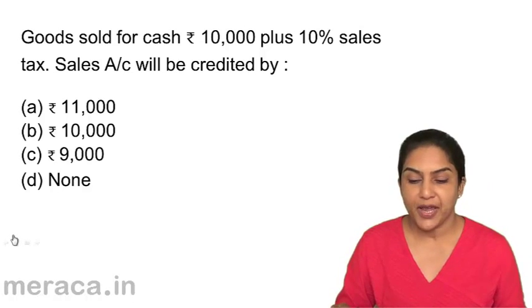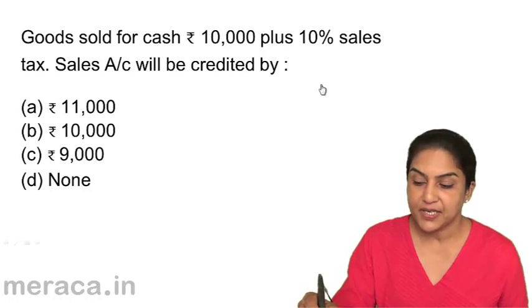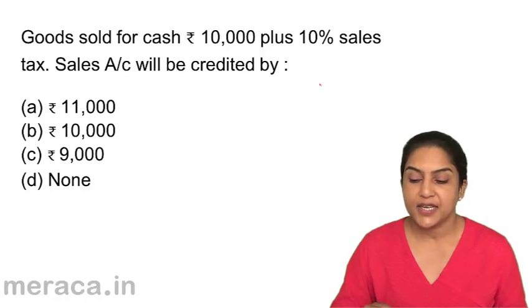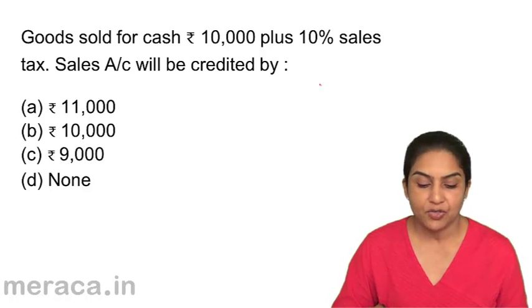Goods sold for cash: 10,000 plus 10% sales tax. Sales account will be credited by: a) 11,000, b) 10,000, c) 9,000, or d) none.